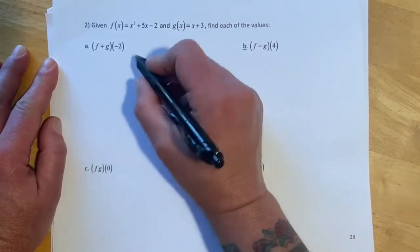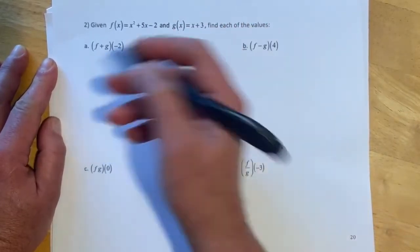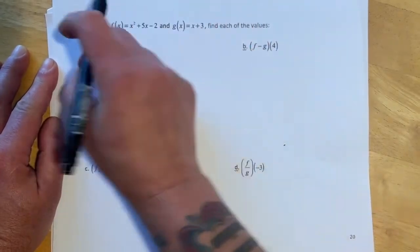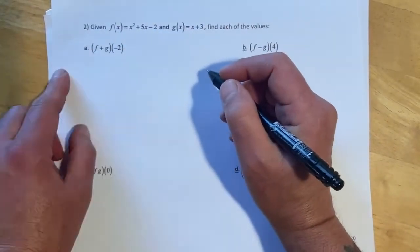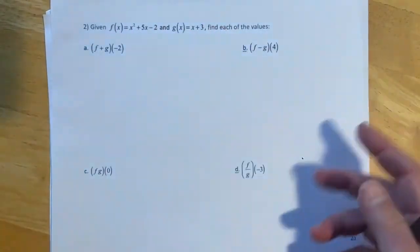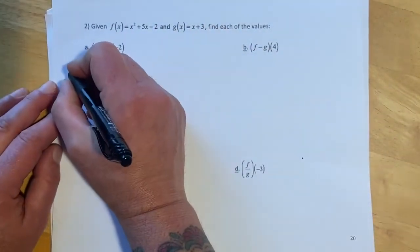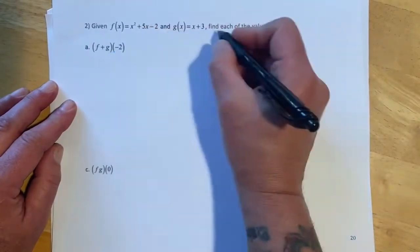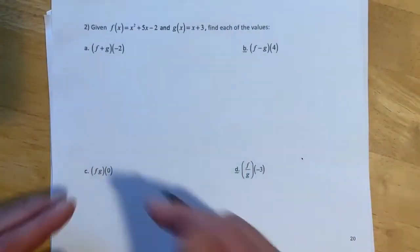We could just calculate f of negative 2, and then calculate g of negative 2, and then add those numbers together. I could write all this out with the negative 2 plugged into all this plus all that. That would work also. And I can also do where I do the algebra first, and I actually add these.